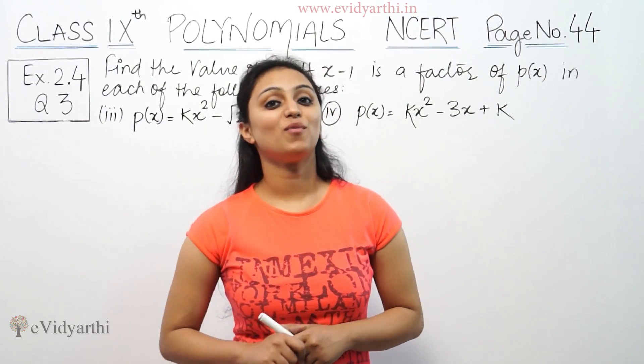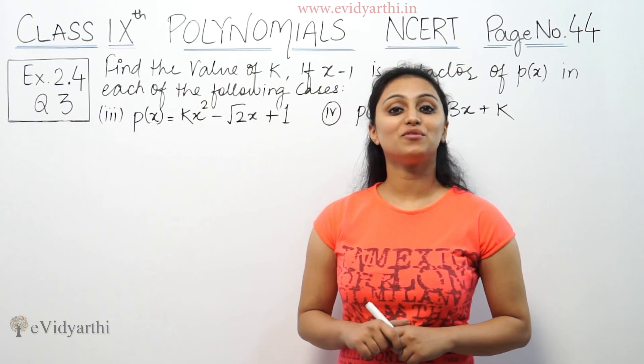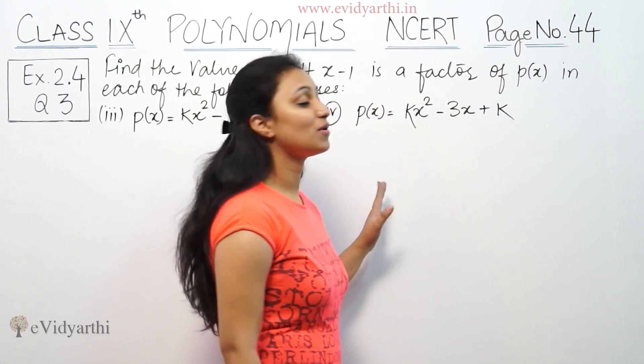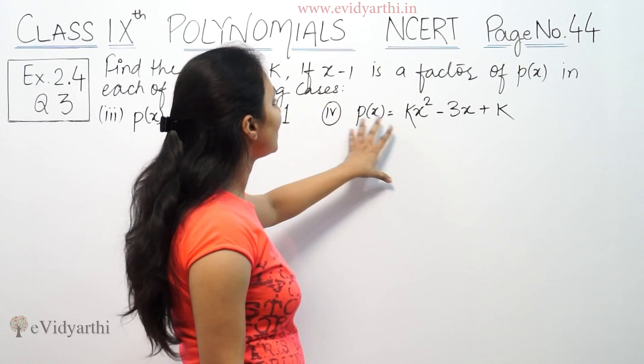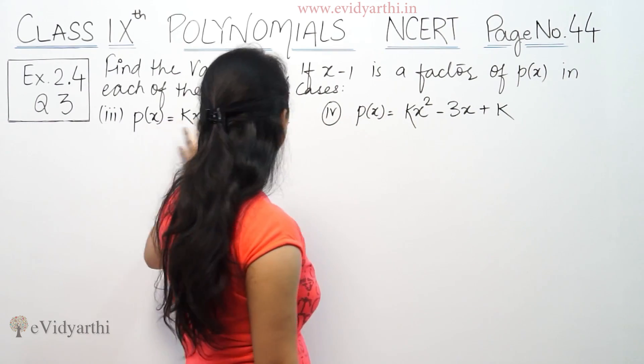Hi, this is Khushbu with another question of polynomials. This is question number 3 from exercise 2.4, page number 44 from NCERT, which asks to find the value of k if x-1 is a factor of p(x) in each of the following cases.